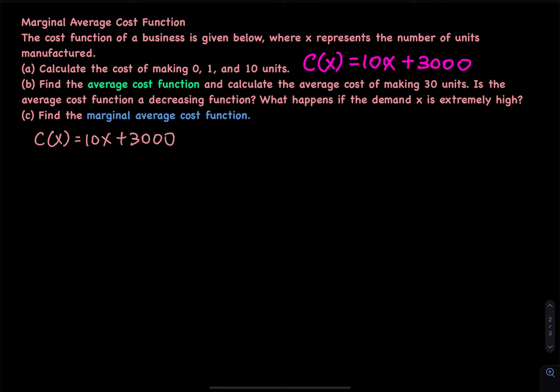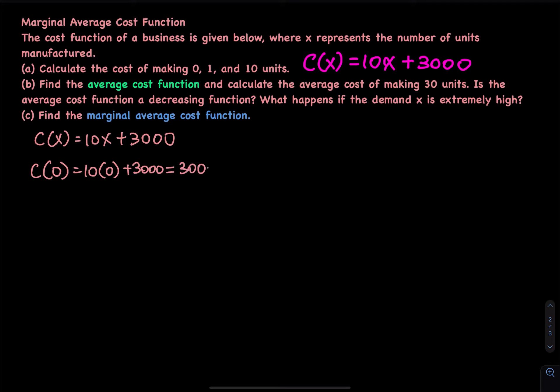The first question asks us to calculate the cost of making 0, 1, and 10 units. If you make 0 units, you do nothing. So that is 10 times 0 plus 3000, which equals 3000. So even though you do nothing, you still have to pay $3000.